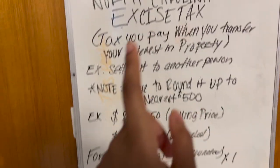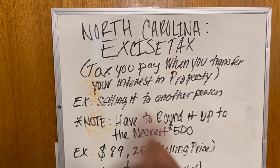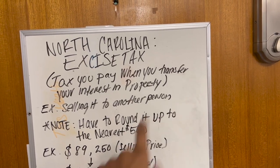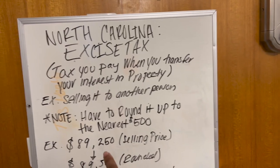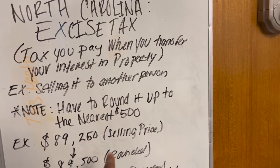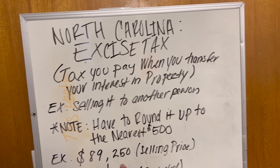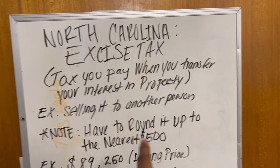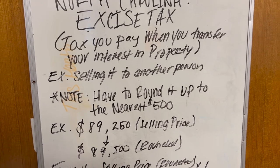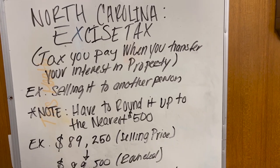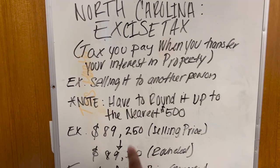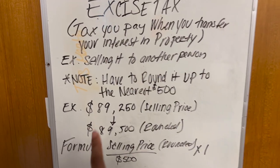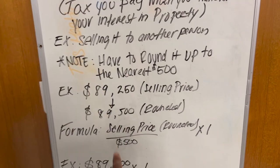Let's make sure that we can plan accordingly when it comes to paying this tax. The excise tax requires you to round up to the next $500 from the selling price. So the selling price could be $89,250, but you have to round to the nearest $500, which makes it $89,500. That rounded selling price is the number you're going to use to calculate the formula.